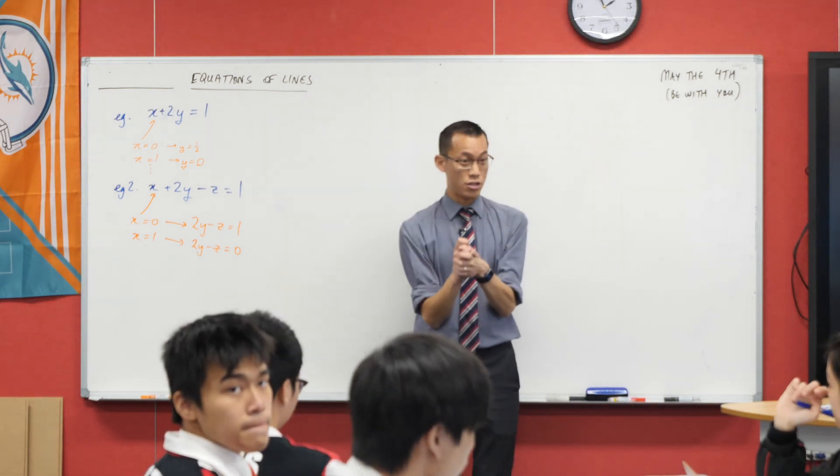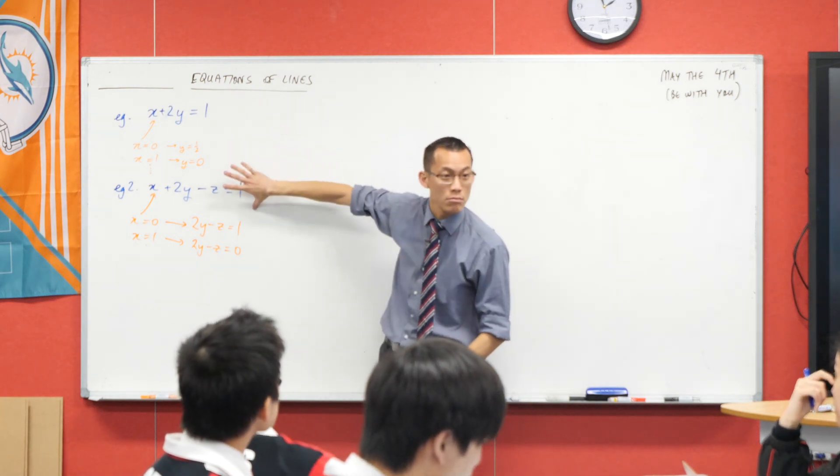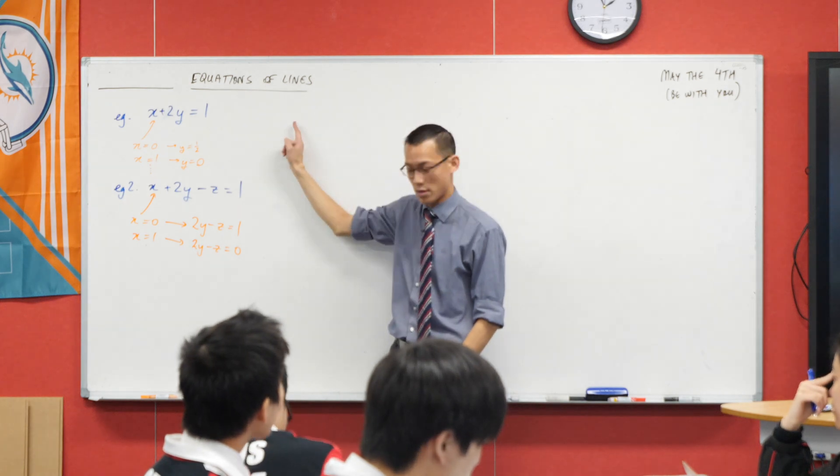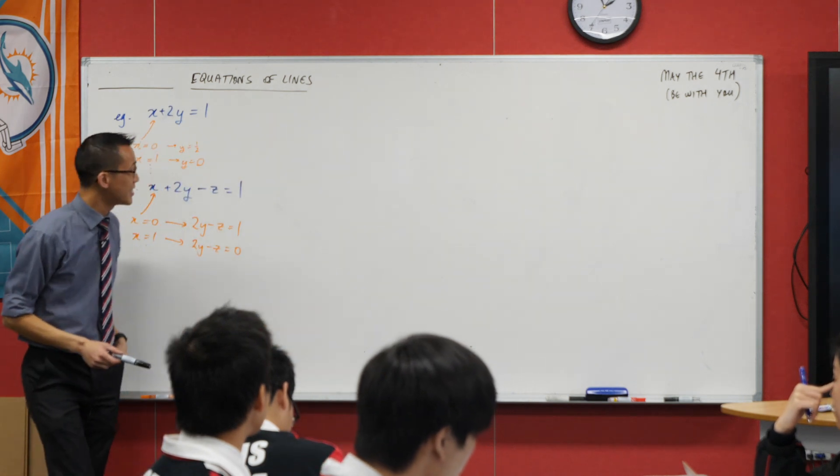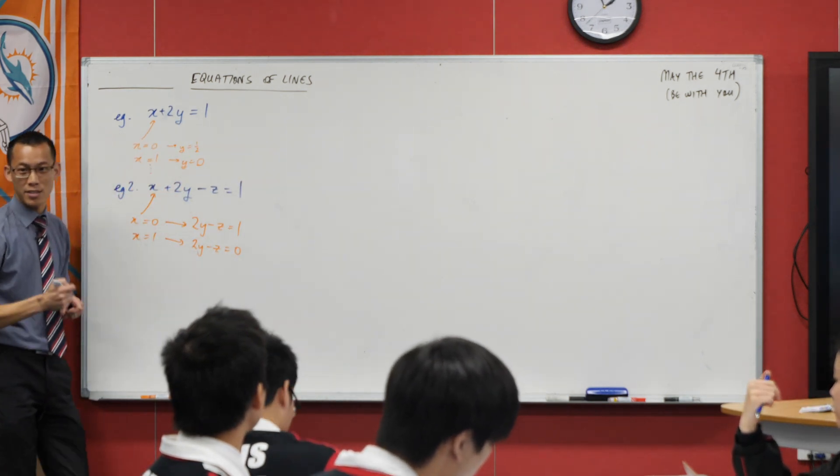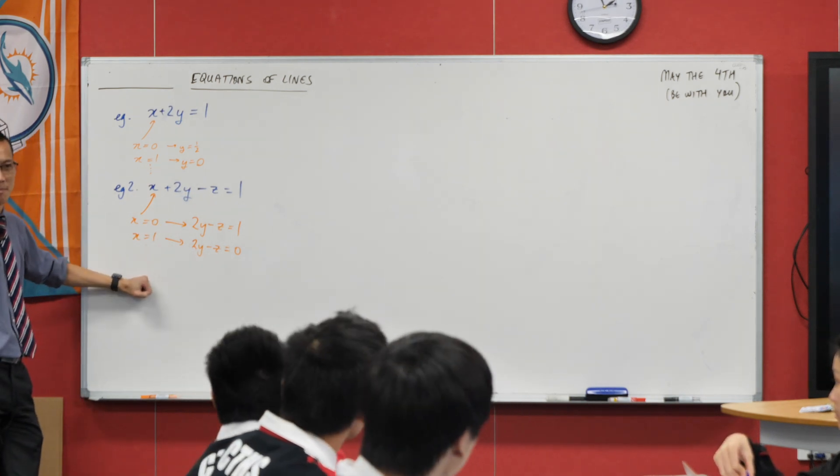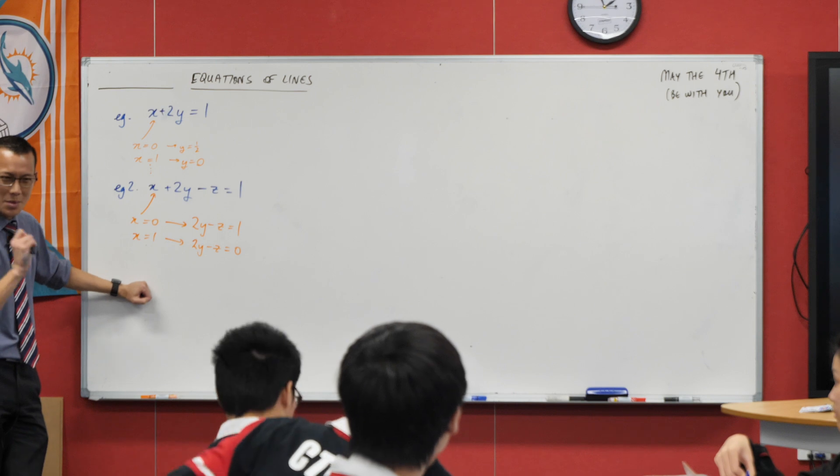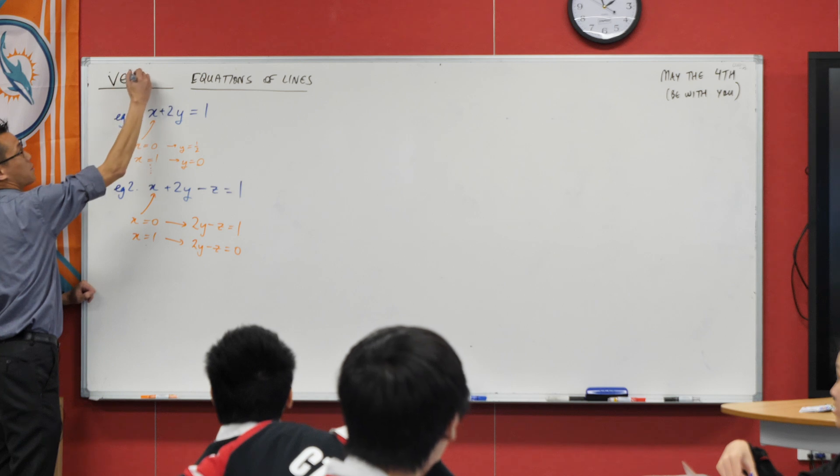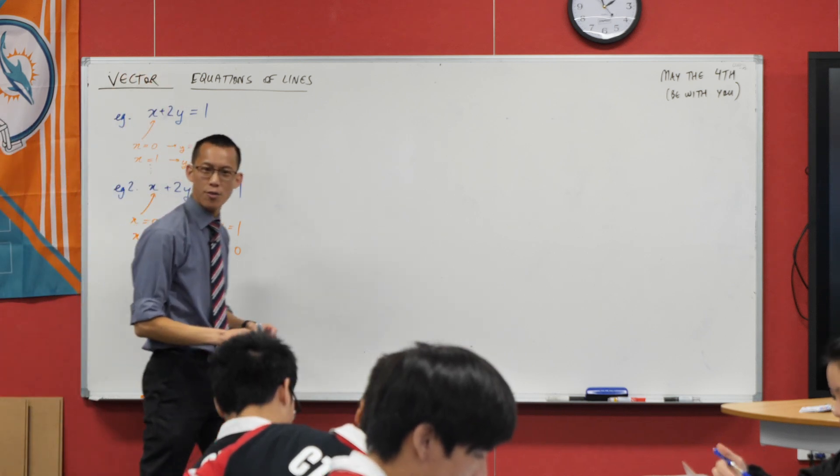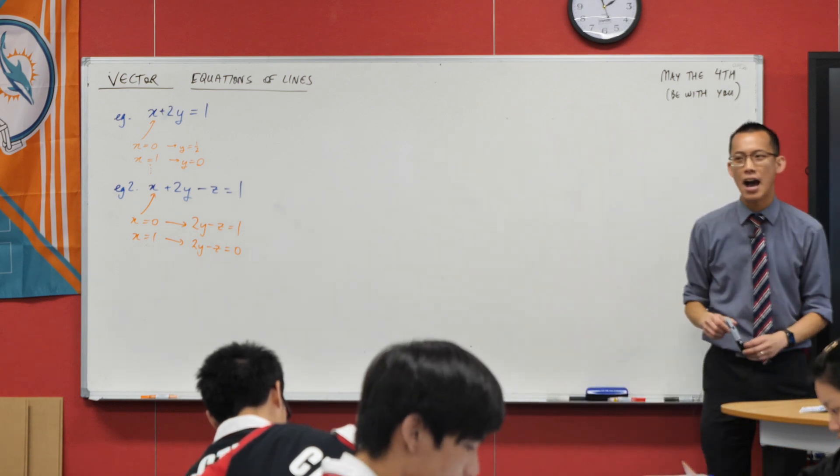So we need another way to do this. These sort of, I guess you could call them, like, Cartesian equations, they're not going to cut it. They don't give us equations of lines. If only we had some kind of object that was better at representing things in a 3D space that we could manipulate instead of just these Cartesian coordinates. Oh, wait, what was the name of this topic again? It was 3D vectors. What if we actually had vectors in our equation? How would this work?